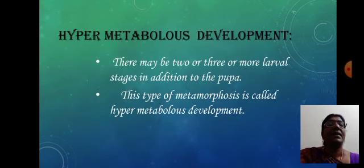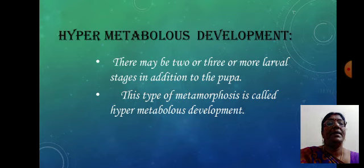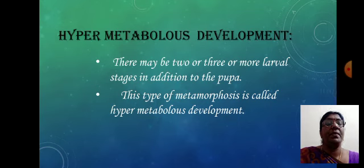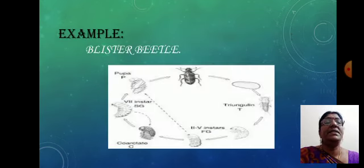In hypermetabolous development, there may be two, three, or more larval stages in addition to the pupa. This is called hypermetabolous development, and the blister beetle is a typical example.